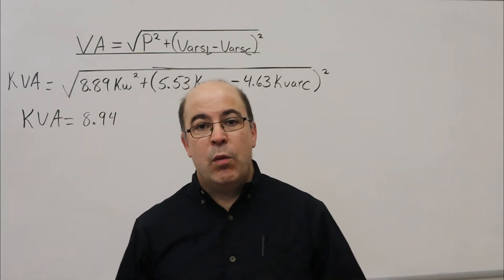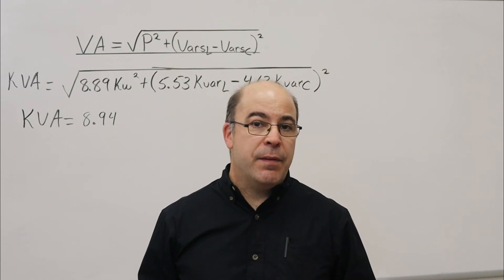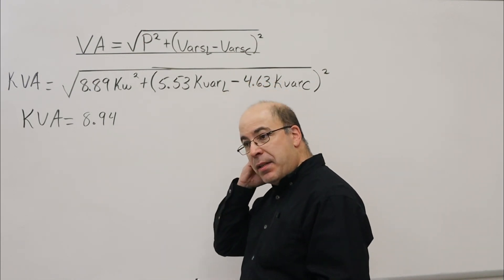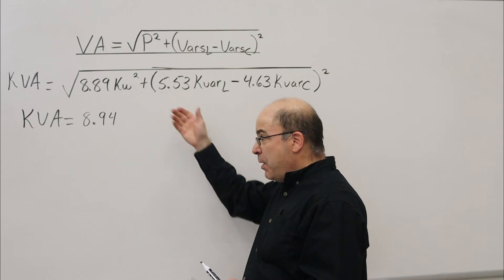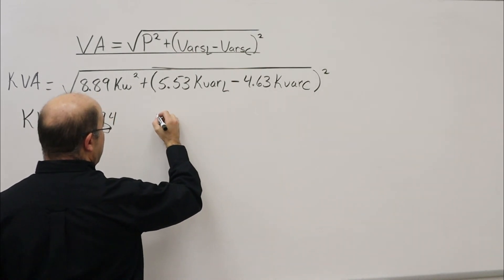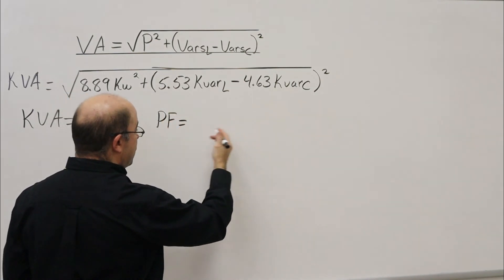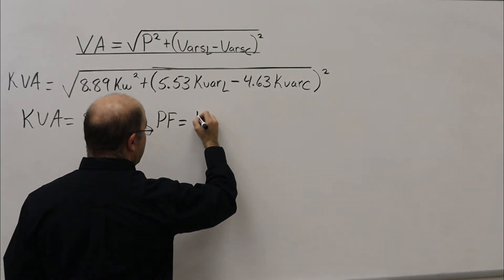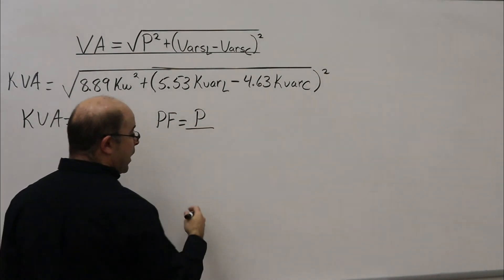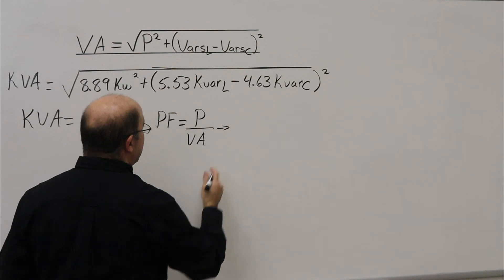Now, we're also going to solve for power factor as well as angle theta. We've maintained that the best formula to work from, especially in this instance, would be from values of power. Power factor equals the ratio of true power P divided by apparent power VA. In this case, 8.89 divided by 8.94.